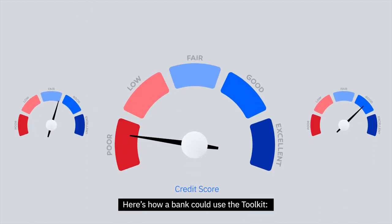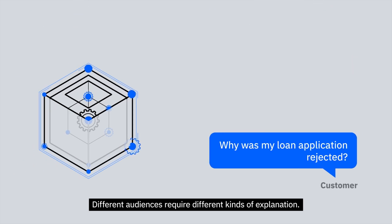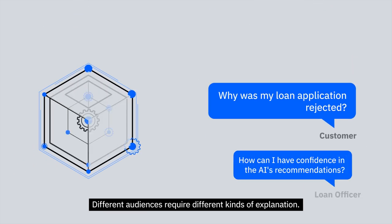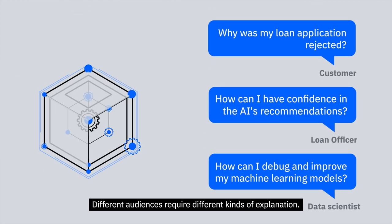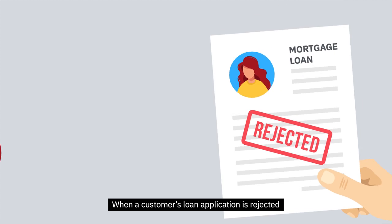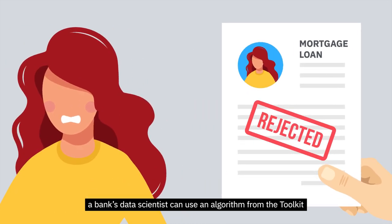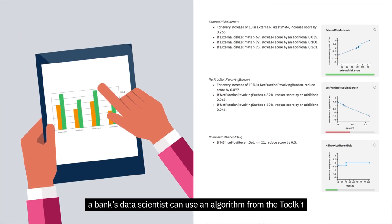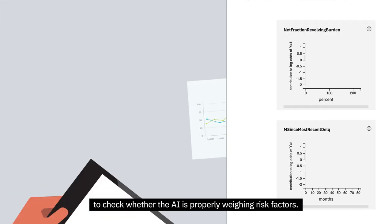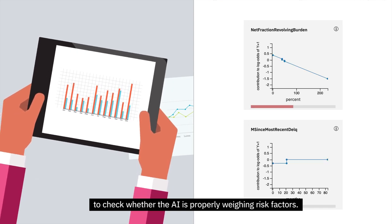Here's how a bank could use the toolkit. Different audiences require different kinds of explanation. When a customer's loan application is rejected, a bank's data scientist can use an algorithm from the toolkit to check whether the AI is properly weighing risk factors.